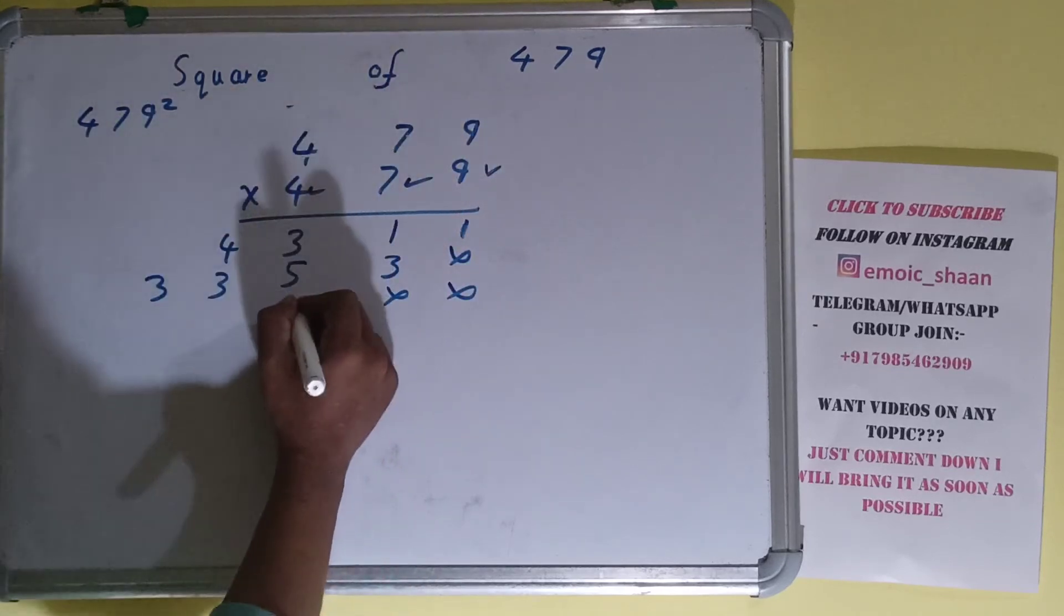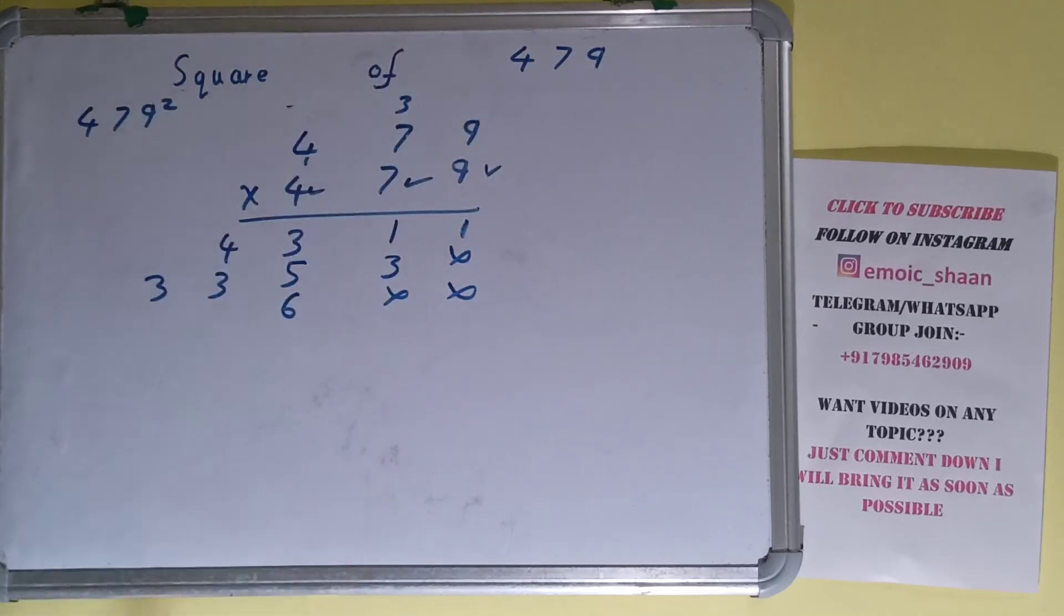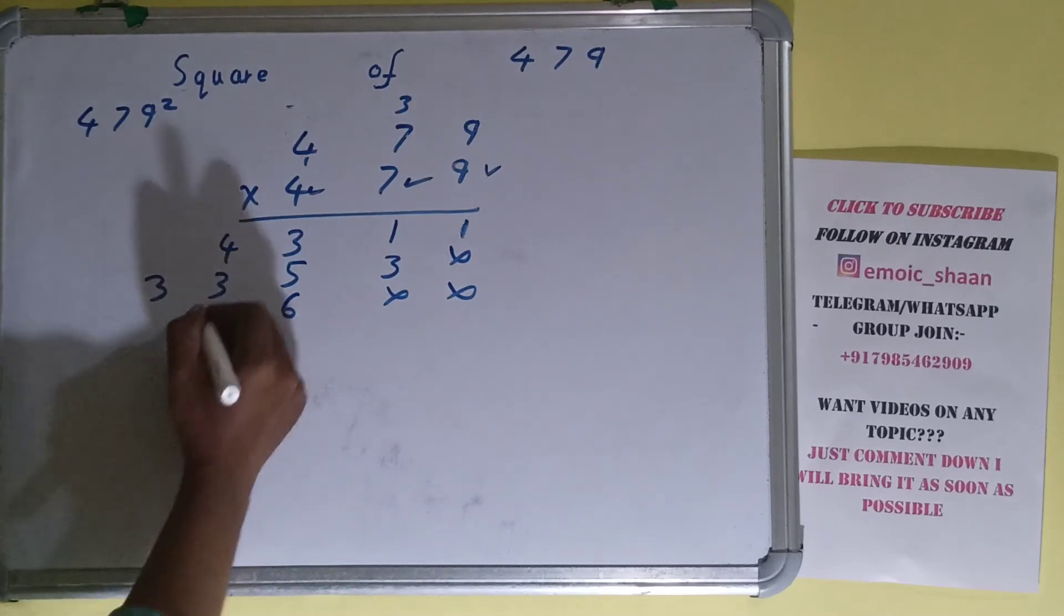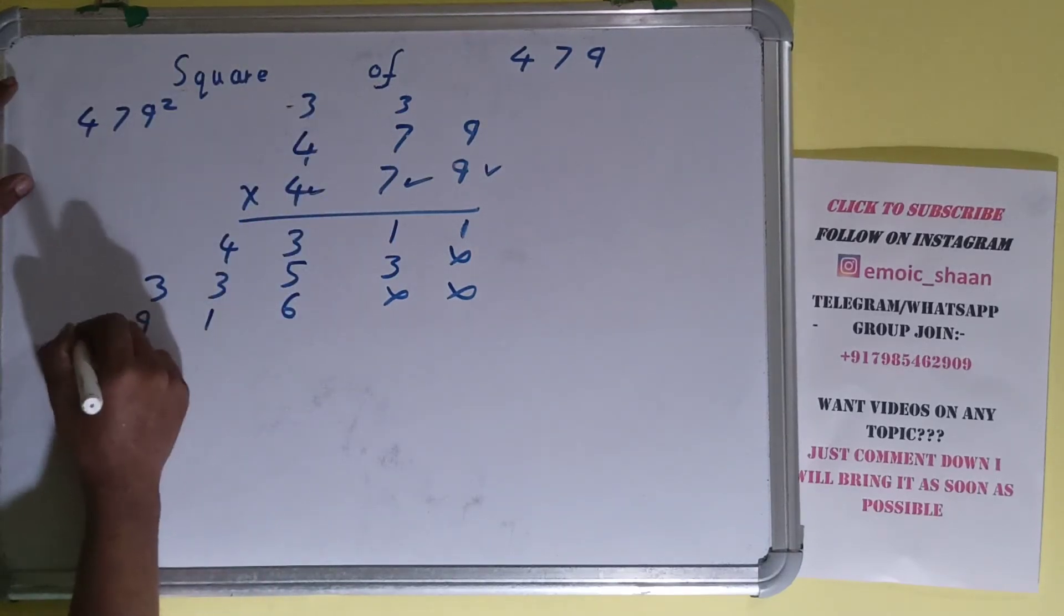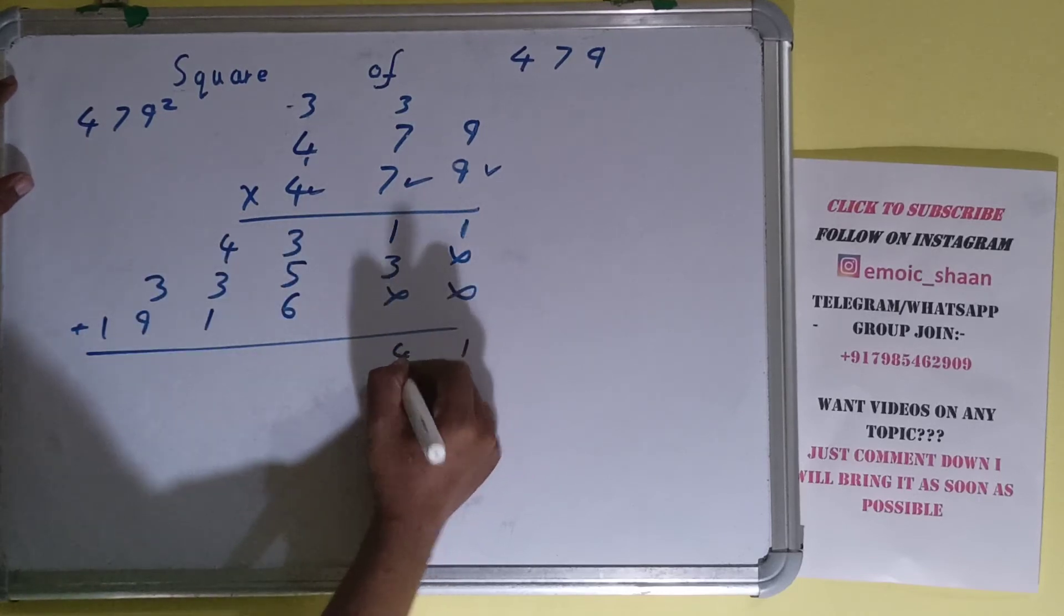Now the 4: 4×9=36, 3 carry. 4×7=28 plus 3 is 31, 3 carry. 4×4=16 plus 3 is 19. Now add everything: 1, 4